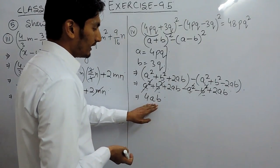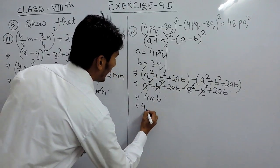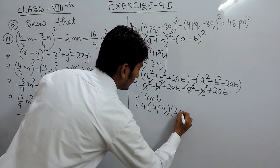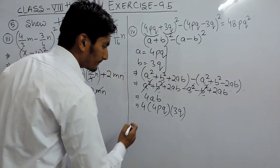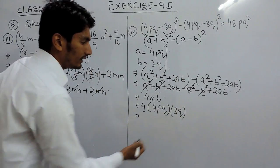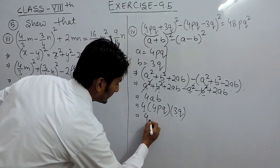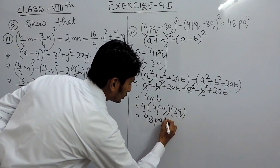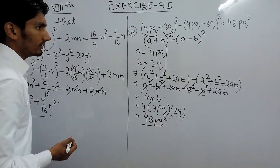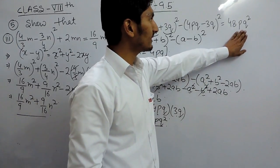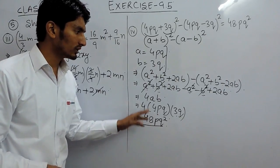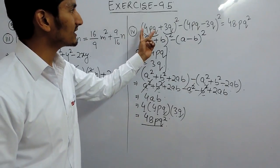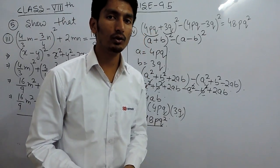So our answer should be 4ab. Since we have considered a as 4pq and b as 3q, now I can substitute the values. This should be equal to 4 into 4 is 16, into 3 is 48. And with p, and q multiplied by q gives q square. So this is 48pq square, which is exactly the same as the right hand side. This is the shortcut — or you can say the best method — to solve this instead of expanding the complete value. This is how we solve this question.